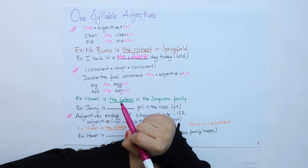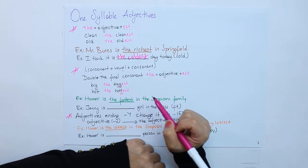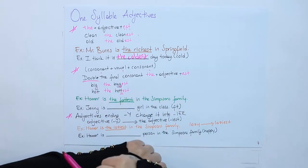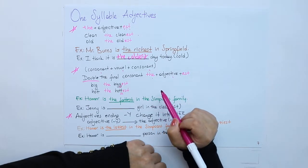Consonant, vowel, consonant order, as in the comparative form. We again double the final consonant, the adjective EST.